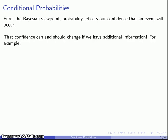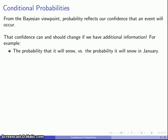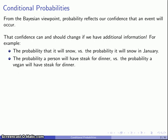That confidence can and should change if we obtain additional information. As an example, we might consider the probability that it will snow versus the probability that it will snow in January. If we happen to know it's January, we're probably going to reassess our assessment of the probability it will snow. Likewise, we might consider the probability a person will have a steak dinner versus the probability that a vegan will have a steak dinner. Knowing this extra information should allow us to reconsider our assessment that the event will or will not occur.